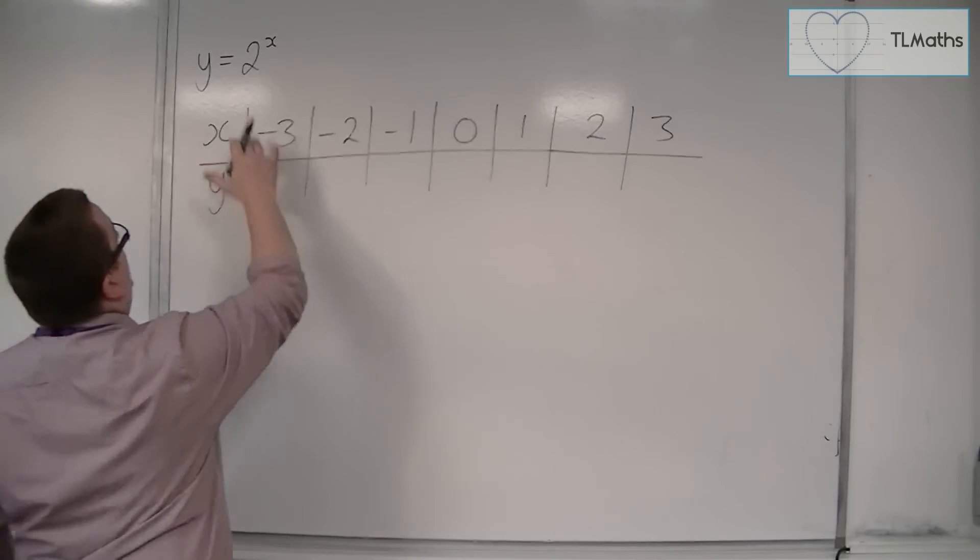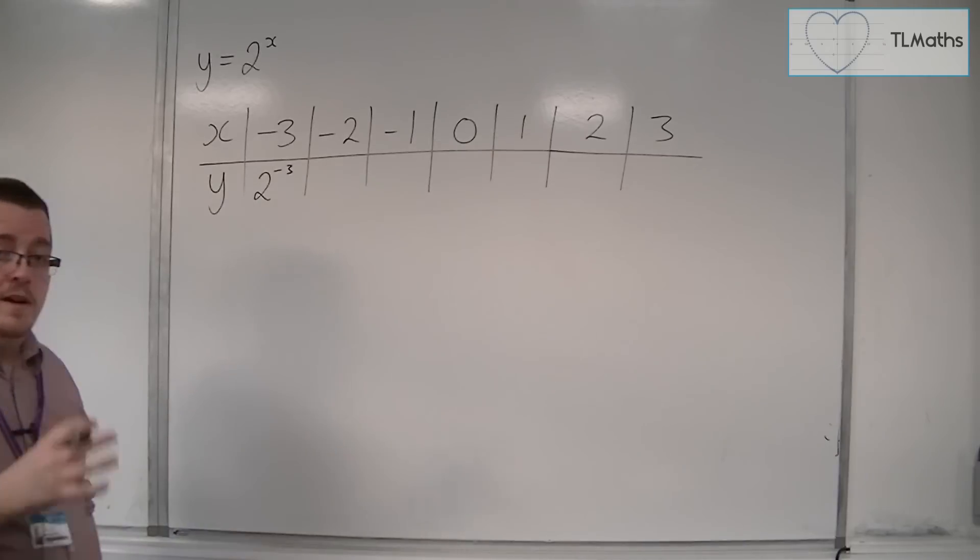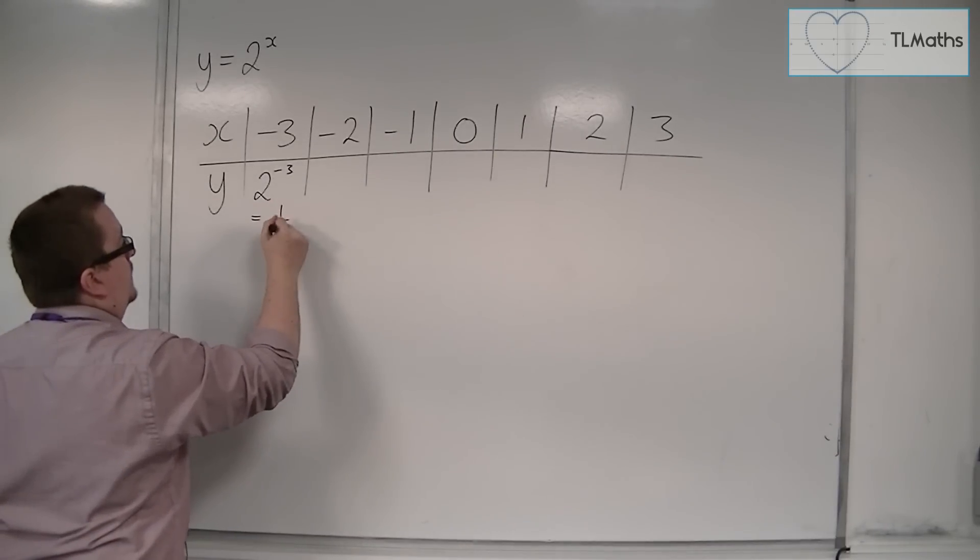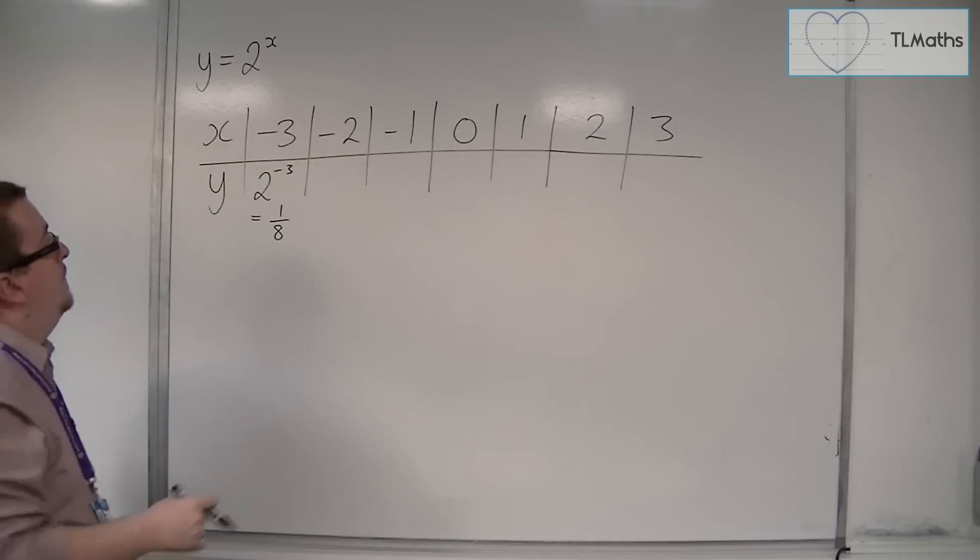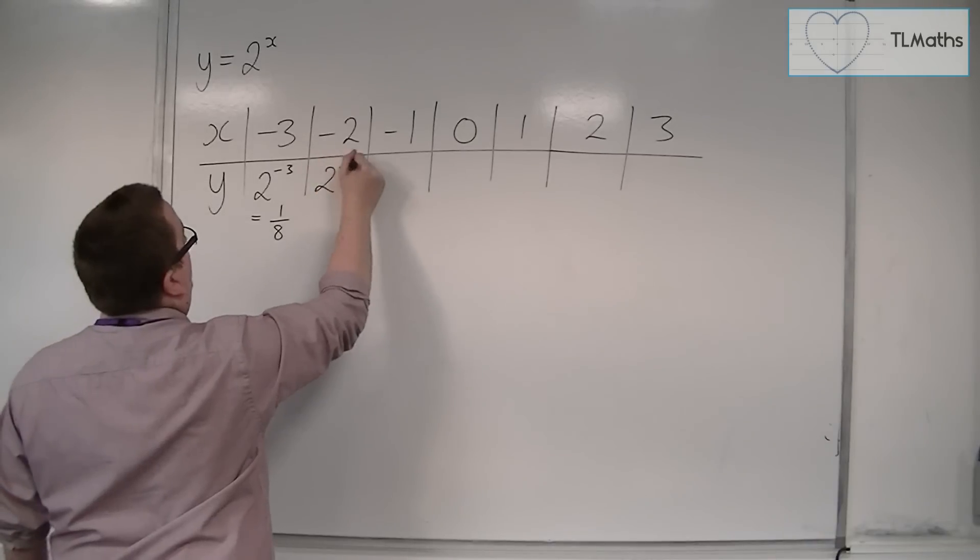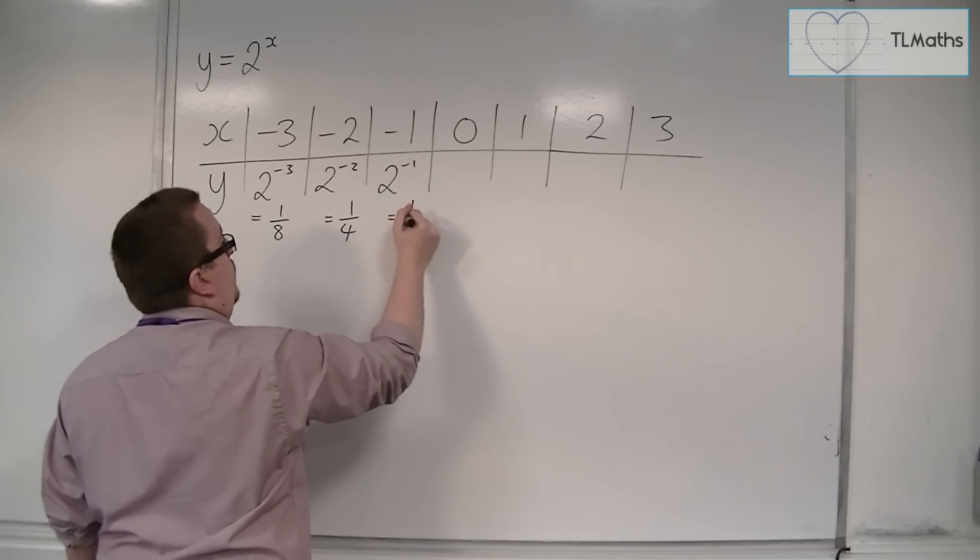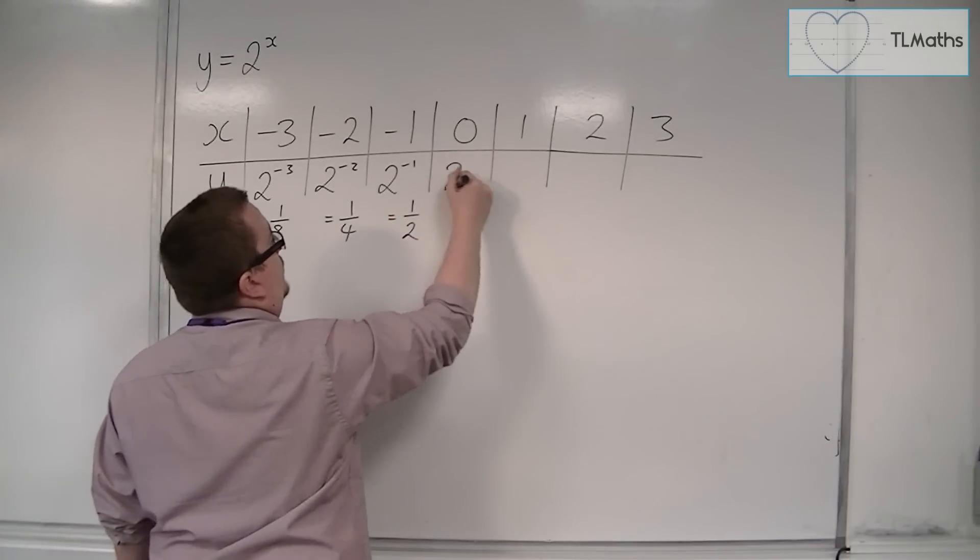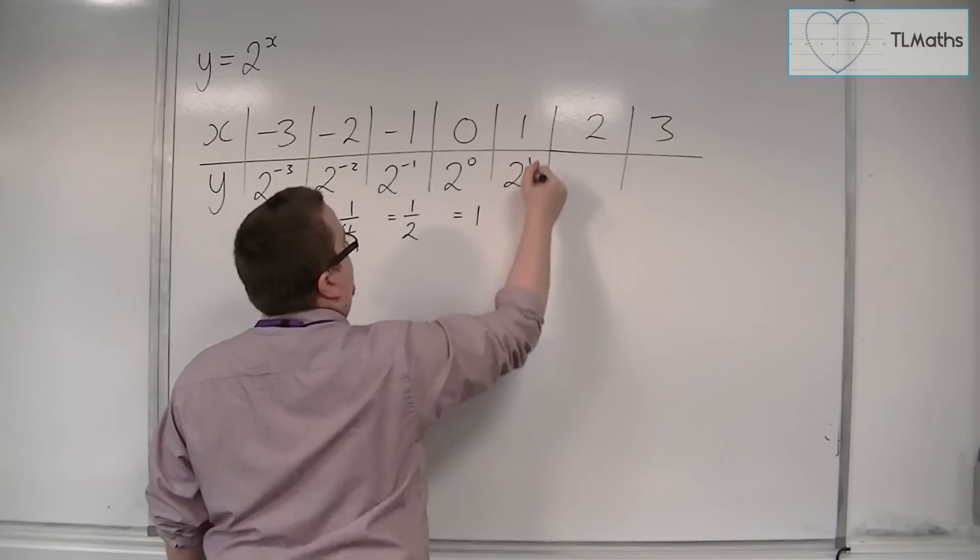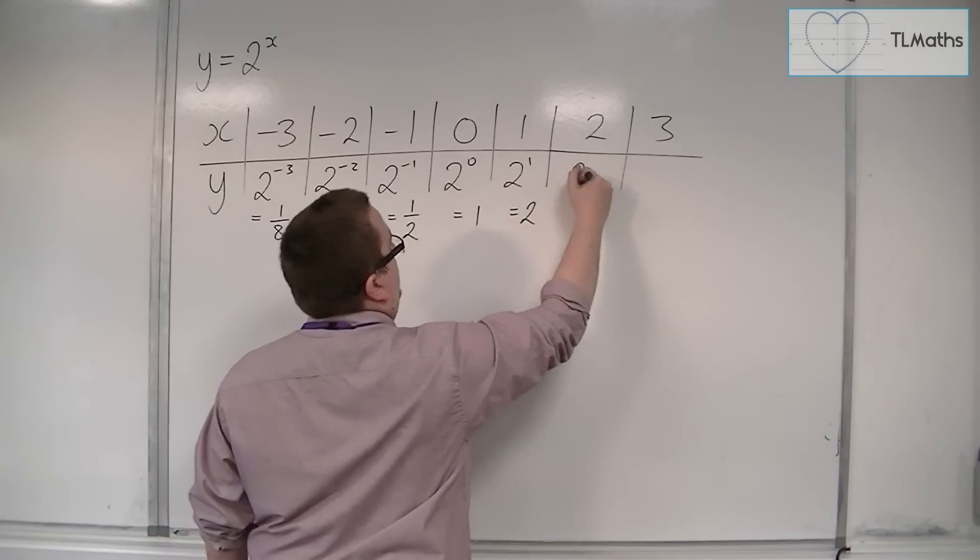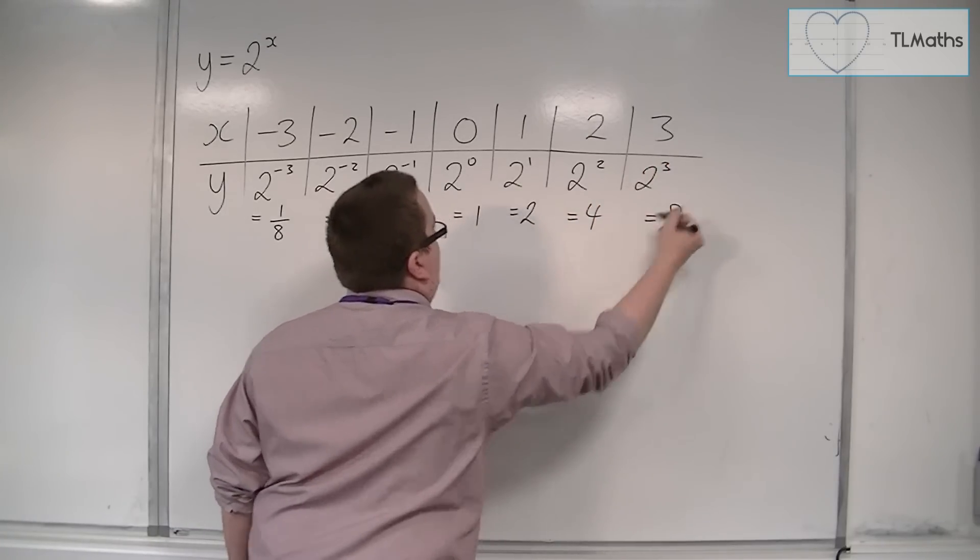Then here I would get 2 to the power of minus 3. Now 2 to the power of minus 3 is 1 over 8. We can check all of these on a calculator. 2 to the power of minus 2 is 1 quarter. 2 to the power of minus 1 is 1 half. 2 to the power of 0 is 1. 2 to the power of 1 is 2. 2 to the power of 2 is 4. And 2 to the power of 3 is 8.